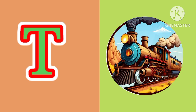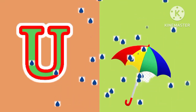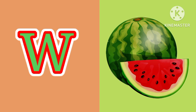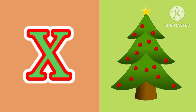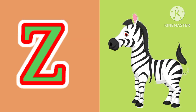T for train, U for umbrella, V for vegetables, W for watermelon, X for egg mastery, Y for yacht, Z for zebra.